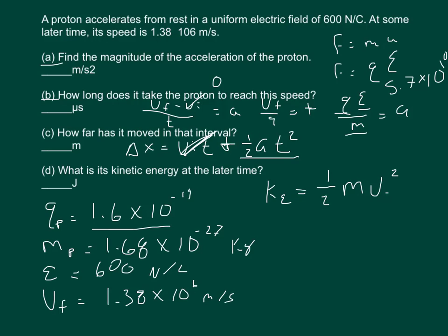And now that we have the acceleration we can plug that into this equation. So the final velocity, 1.38 times 10 to the sixth, divide it by the 5.7 times 10 to the tenth, and that will give us our time in seconds. You've got to convert that to microseconds. You should get something like 2.415 times 10 to the negative fifth. Now remember microseconds is negative sixth, so move your decimal over one more place and you'll get 24.15 microseconds.